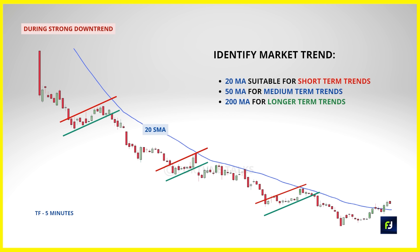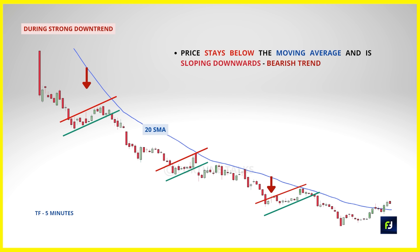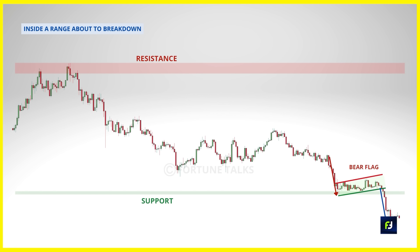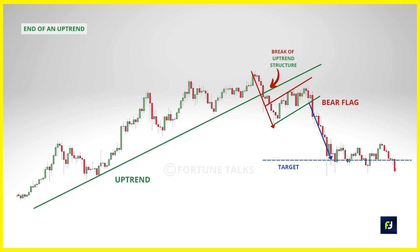The most common place to encounter a bear flag is during a strong downtrend. Identify the market trend using moving averages — the 20 MA for short-term, 50 MA for medium-term, and 200 MA for long-term trends — and make sure the price stays below and is sloping downwards. You can also look for bear flags in a range market where there is a buildup near a support level forming a flag consolidation, then enter short when the price breaks the buildup and support level. You can also find a bear flag at the end of an uptrend when a break in the uptrend structure is accompanied by a flag consolidation, helping you enter a trend reversal early.